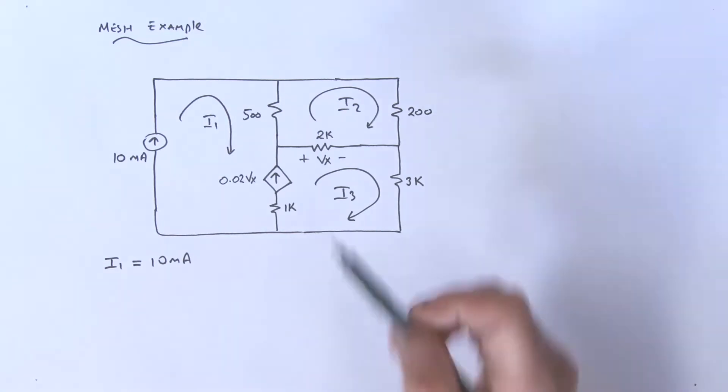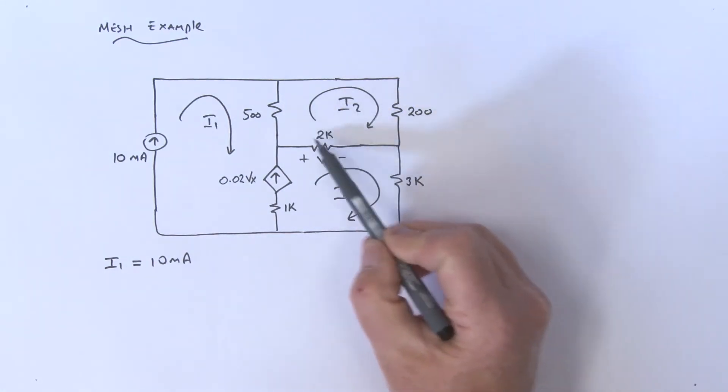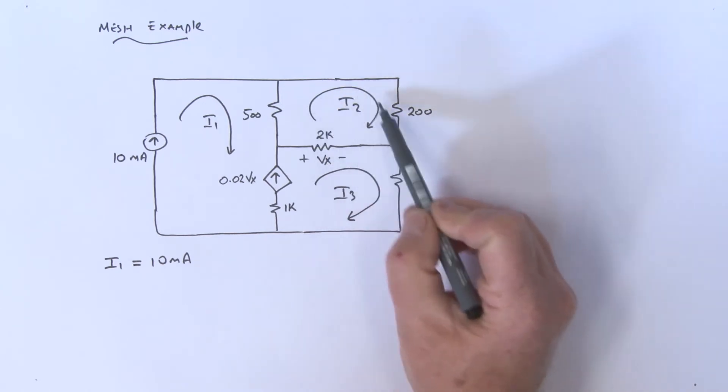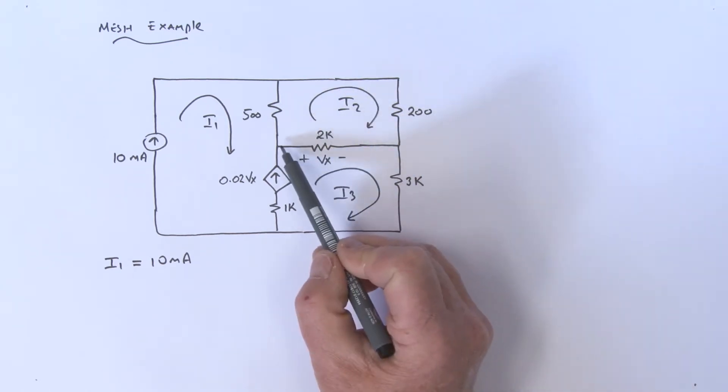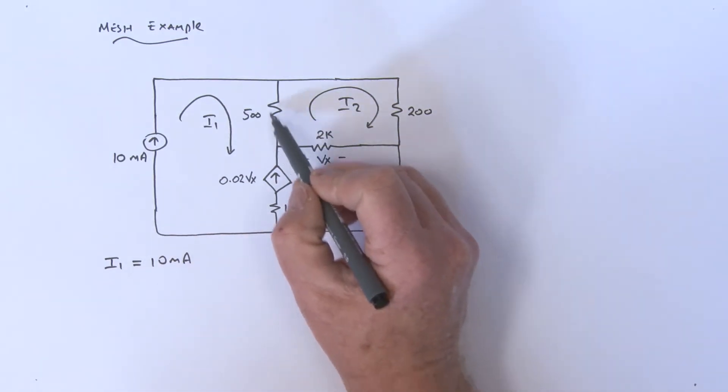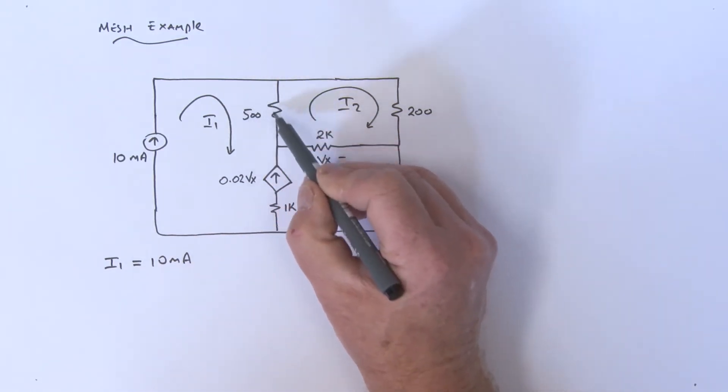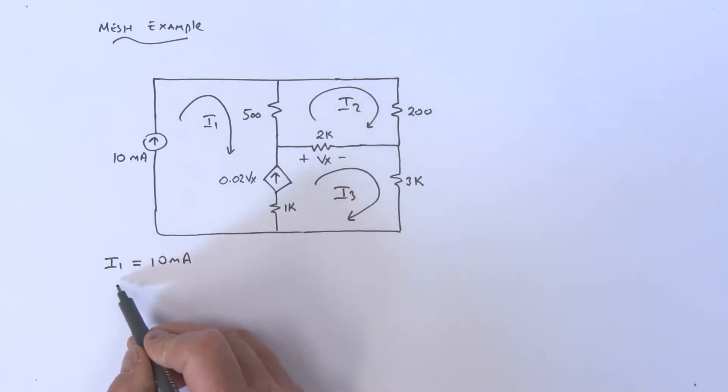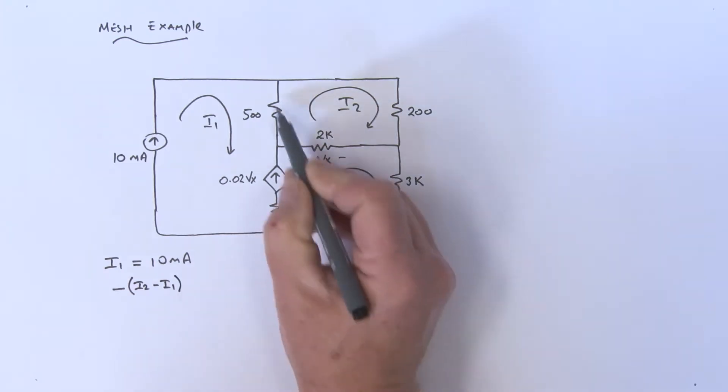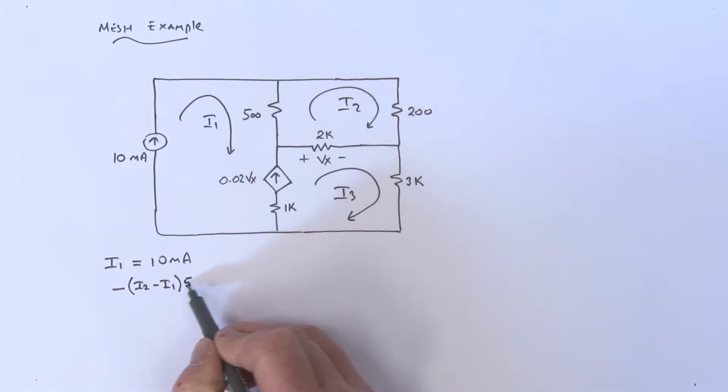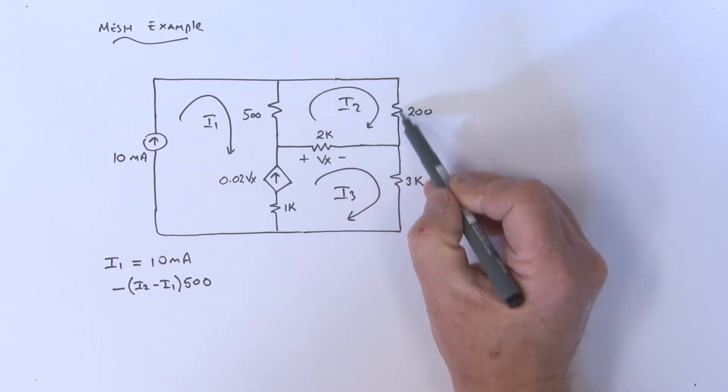What else can I do? Well, I could look at traversing around the i2 mesh. That's pretty easy to do. Let's start right here. I'm going in this direction, so that's an i2 minus an i1. I can write that down: minus open a bracket, that's i2 minus i1, and that's multiplied by the 500 ohms.